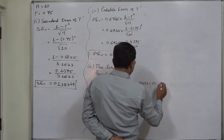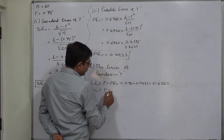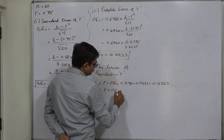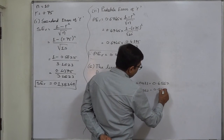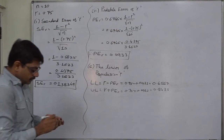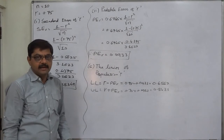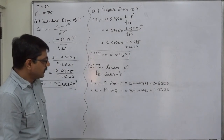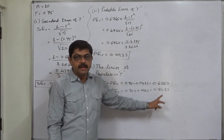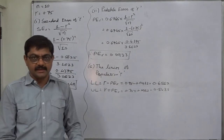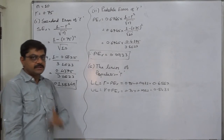The lower limit will be: correlation coefficient minus probable error, that is 0.75 minus 0.0933, which equals 0.6567. The upper limit will be: correlation coefficient plus probable error, that is 0.75 plus 0.0933, which equals 0.8433. If we draw another sample from the same population and calculate its correlation coefficient, the probability that it falls within this range is 50%. This is the interpretation of probable error and the limits calculated on its basis.